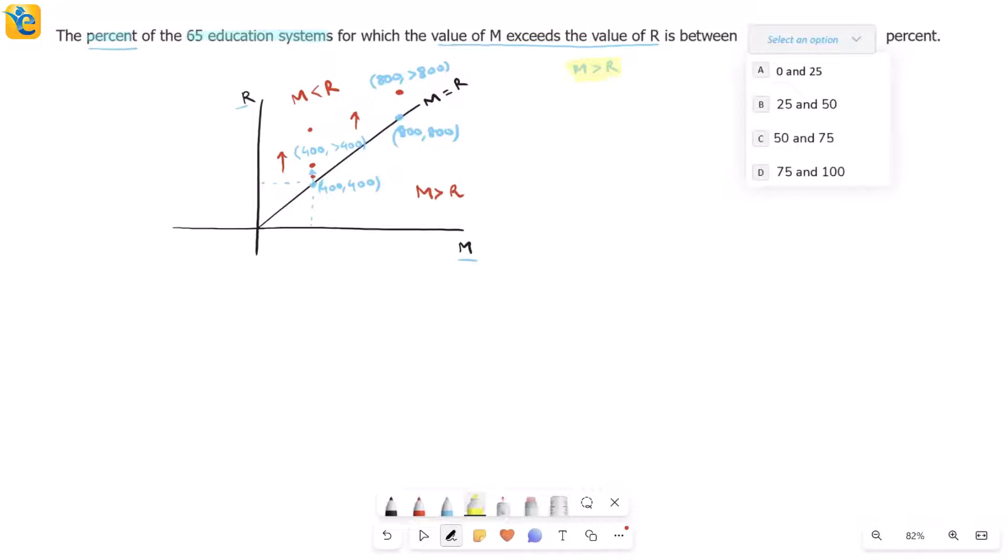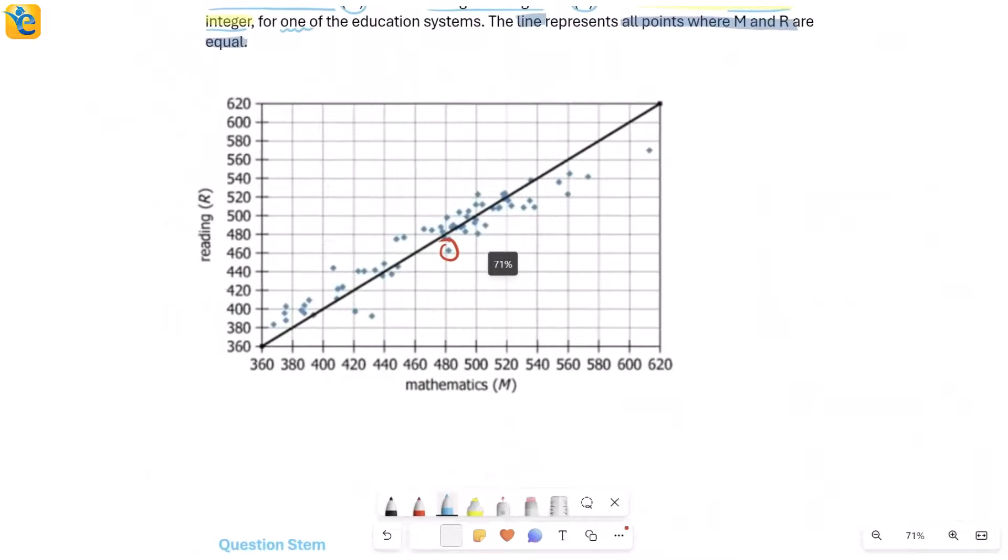So essentially we want to see what percent of the 65 systems, the 65 dots that we have, what percentage of those are in this region? What percent of the 65 dots are below the line? That is where I have M greater than R as I want. So we'll just go to the scatter plot and count how many points are below this line. Let's just go and try to find that. Here we are. So all of the points below, you need all of these here and count them.